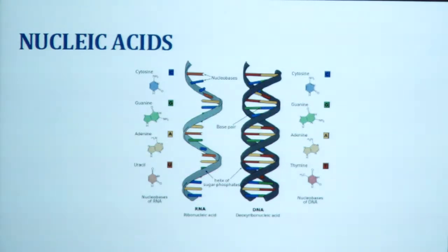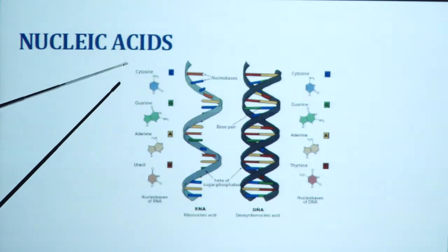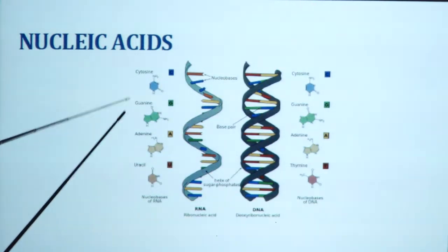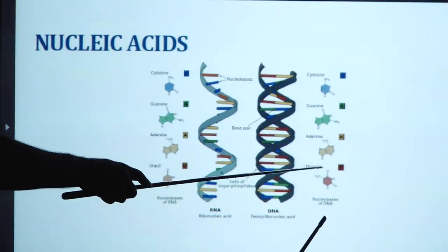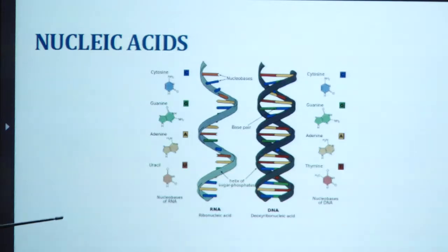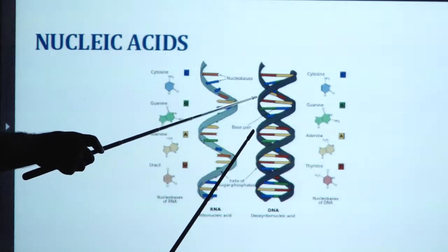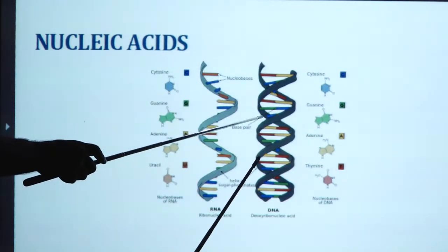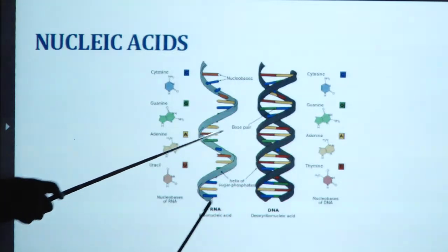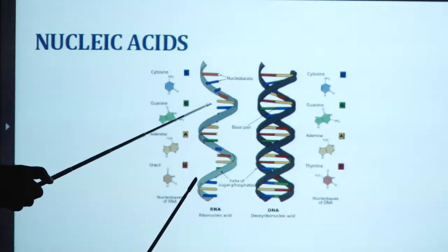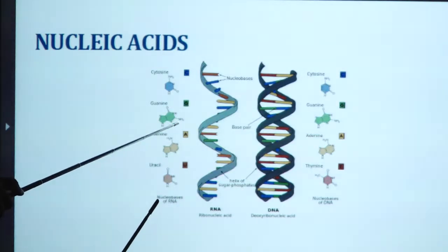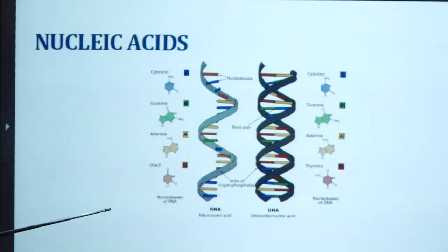We have different purine and pyrimidine bases. These are the nitrogenous bases: cytosine, guanine, adenine, uracil for RNA; and cytosine, guanine, adenine, thymine for DNA. In case of DNA, it is double helical in nature because two strands are coiled with each other, making a double helical model. In case of RNA, it is single stranded — there is no formation of helix like DNA. RNA has the uracil nitrogenous base, but DNA has the thymine nitrogenous base.